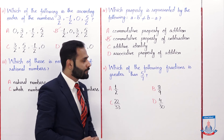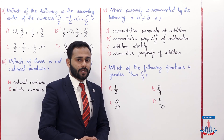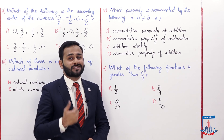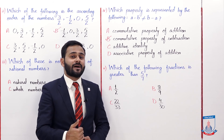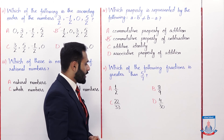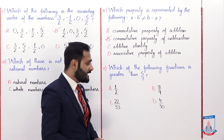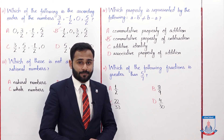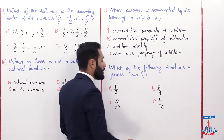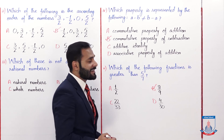Now the last MCQ. MCQ number 5: Which of the following fractions is greater than 5 by 7? Aapko batana hai kaun sa fraction 5 by 7 se greater hai. Options: A) 1 by 2, B) 8 by 9, C) 22 by 33, D) 4 by 30. The correct answer is 8 by 9, because 8 by 9 jo hai wo 5 by 7 se greater hai.